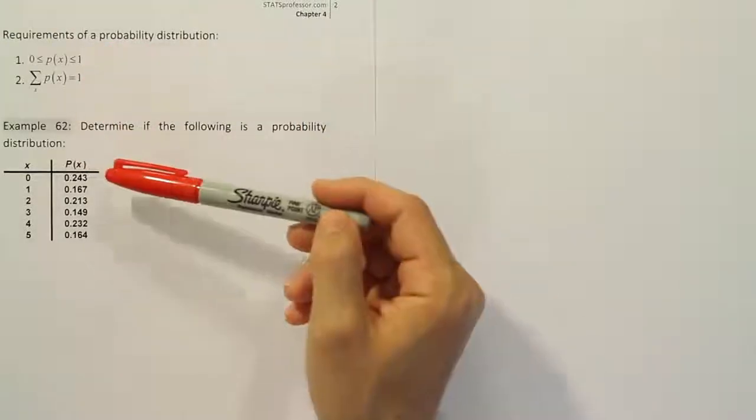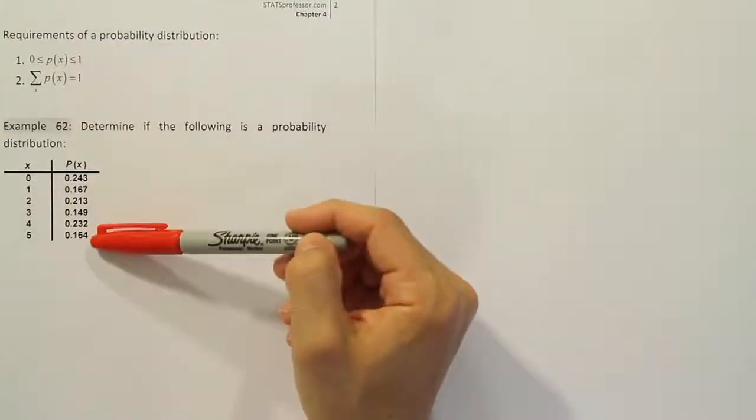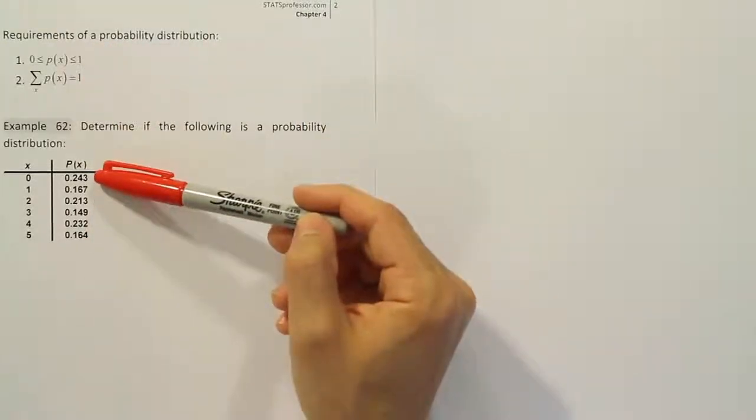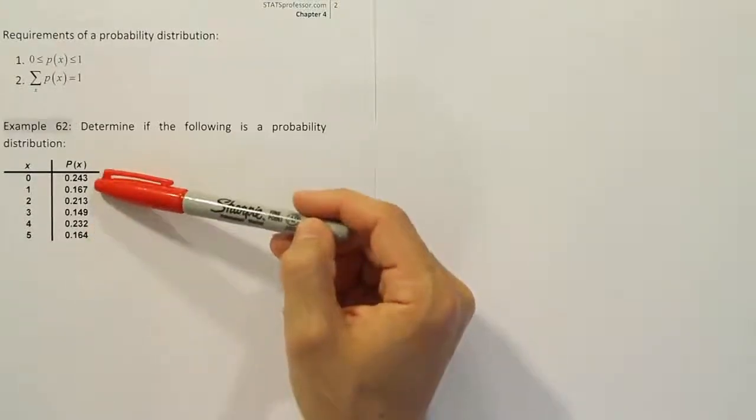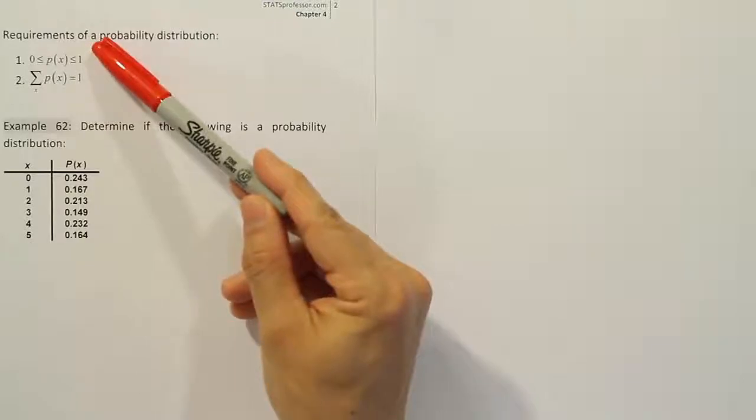So let's look at our probabilities here. It looks to me that each of these is okay because none of them is negative and none of them is over 1. So because of that, we'll say that condition 1 is met. That's easy enough.